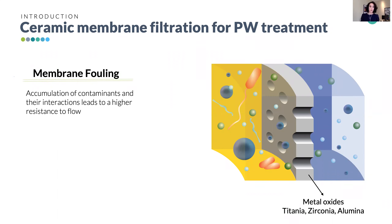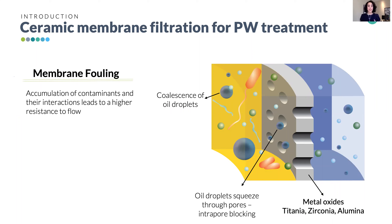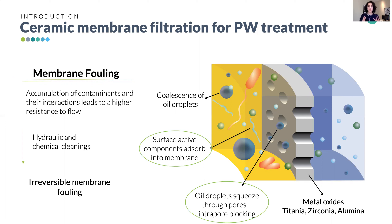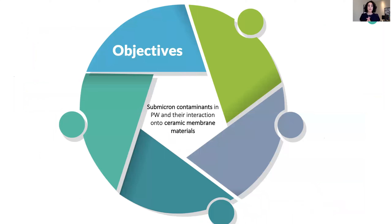Membrane fouling is complex in produced water. Oil droplets can coalesce and form a gel layer; they are deformable so they can squeeze through the pores contributing to intrapore blocking. Surface-active components and submicron oil droplets can get adsorbed into the membrane pore walls. We can partially recover the membranes using hydraulic and chemical cleaning, but not completely due to irreversible fouling. These two phenomena have been identified as key factors in irreversible fouling, and all mechanisms occur simultaneously and are not well understood.